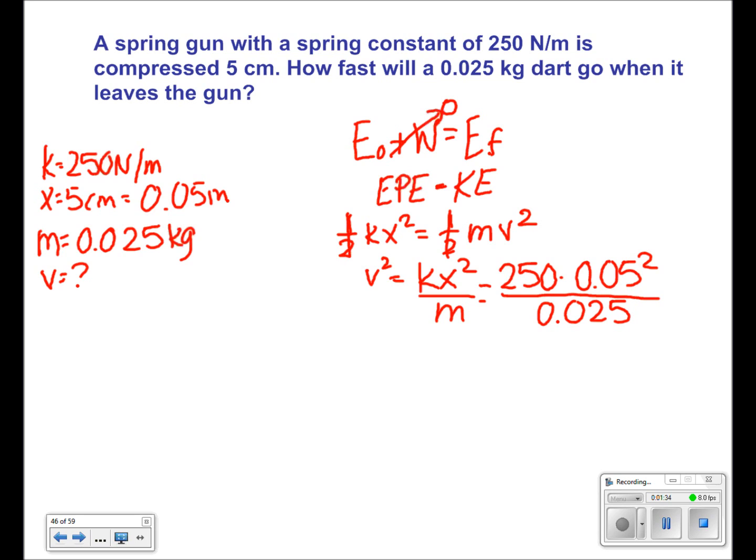This then means that v² is equal to 25. Square rooting both of our sides, we get that v is equal to 5 meters per second for this dart.